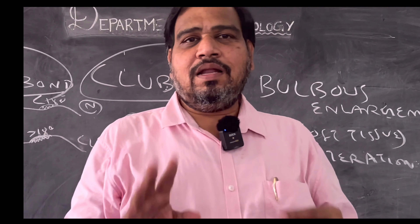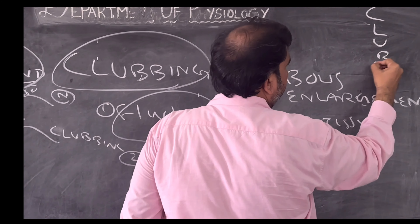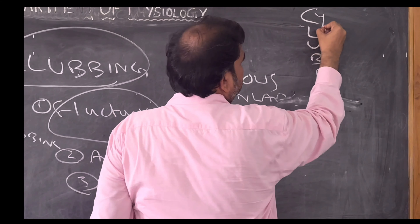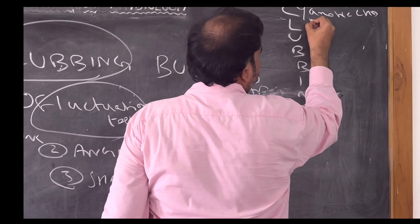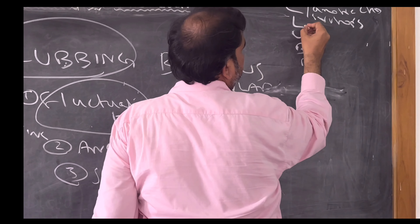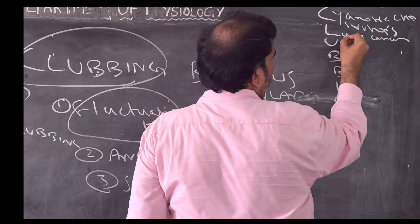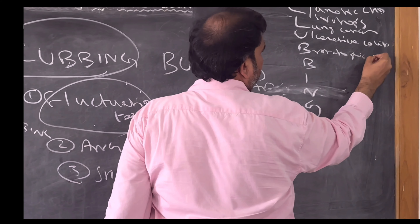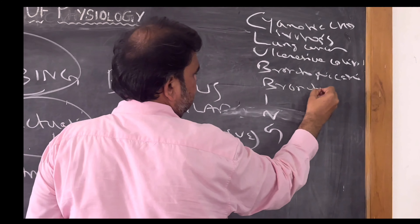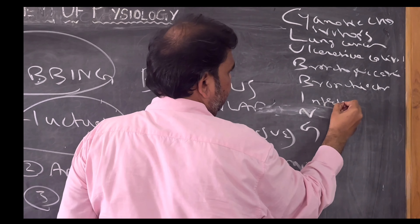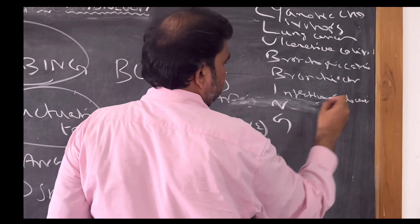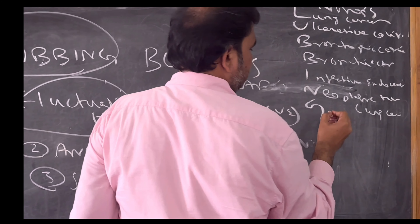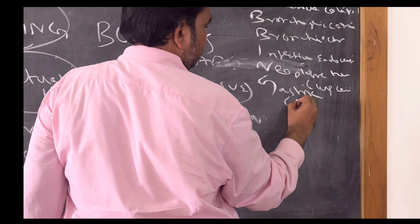Now coming to causes of clubbing, there is a mnemonic — C-L-U-B-B-I-N-G. For C: cyanotic congenital heart disease, cirrhosis. For L: lung cancer. For U: ulcerative colitis. For B: bronchogenic carcinoma. For B: bronchitis. For I: infective endocarditis. For N: neoplastic tumour, for example lung carcinoma. For G: gastric, like ulcerative colitis.